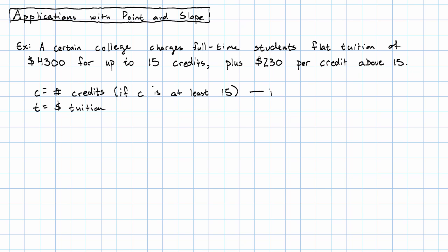Also note that the number of credits will definitely be the independent variable. We're going to choose how many credits to take and find out what tuition we're charged, not choose what tuition to pay and find out how many credits we end up taking. Our tuition will be the dependent variable.